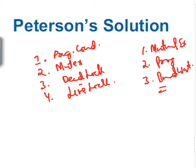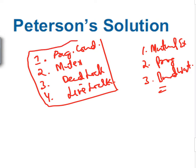Now those four algorithms are just the beginning — they led us to arrive at the solution given by Peterson. The Peterson solution is a two-process solution and it works perfectly.